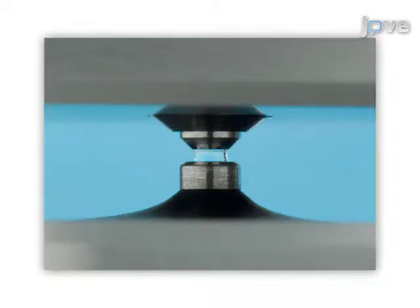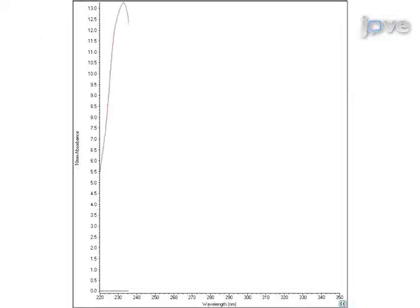The pedestal automatically moves to adjust for optimal path length. Shortening the path length eliminates the need to perform dilutions for most protein samples. Measurement occurs in seconds and UV-VIS spectrum results are displayed.